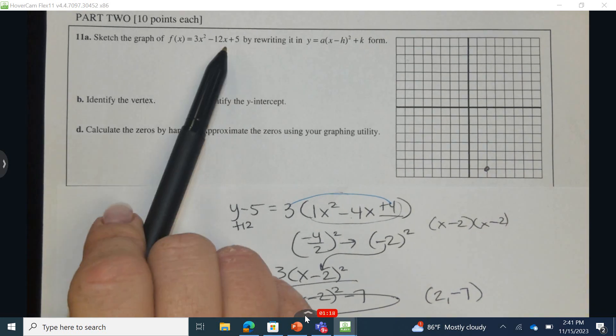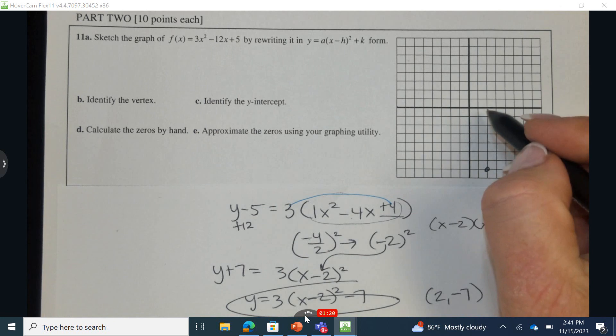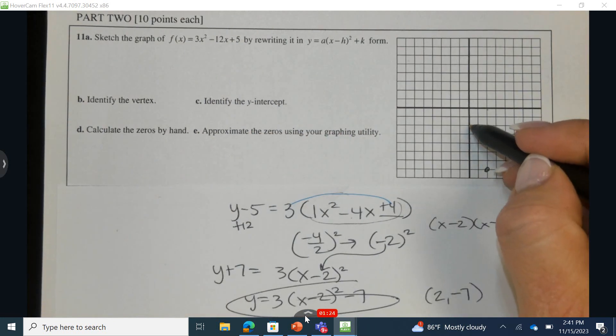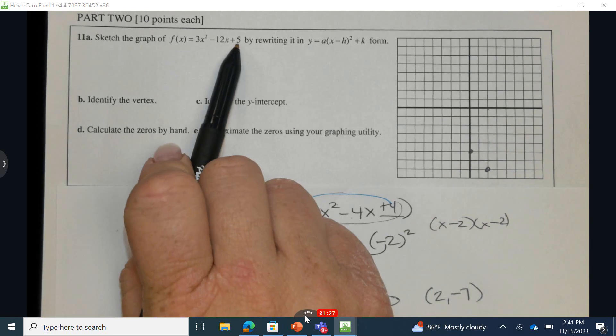Let's identify the y-intercept. Well, in standard form, it can be found all by itself at the very end. 1, 2, 3, 4, 5, as the constant.